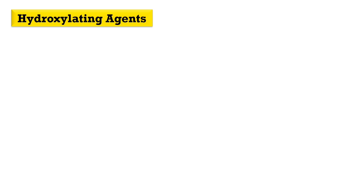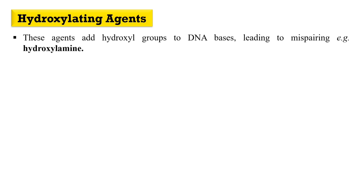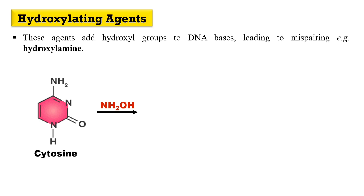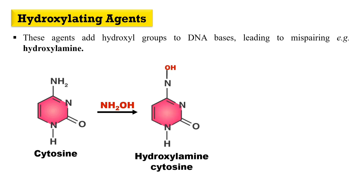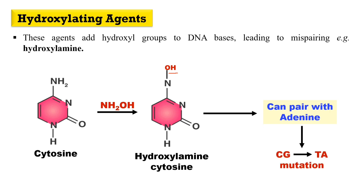The next example of a chemical mutagen is a hydroxylating agent. Hydroxylating agents add a hydroxyl group (OH group) to the DNA bases, which changes their properties and leads to mispairing. The example here is hydroxylamine, which adds a hydroxyl group to cytosine. As a result, this hydroxylamine-modified cytosine can now base pair with adenine, resulting in CG-to-TA mutations.